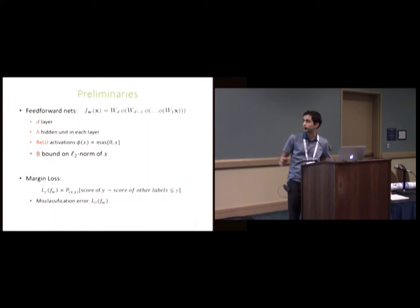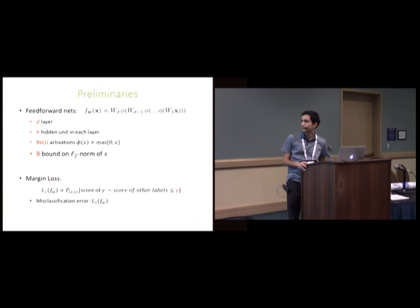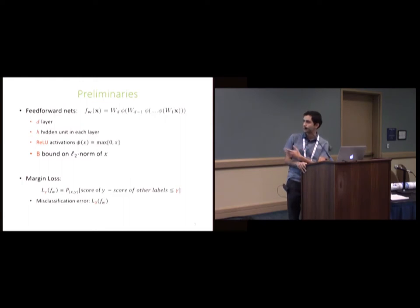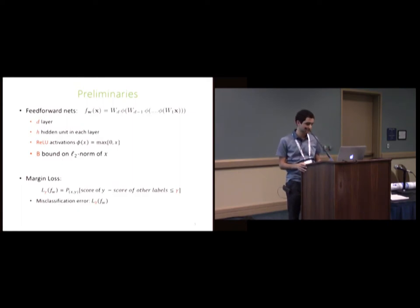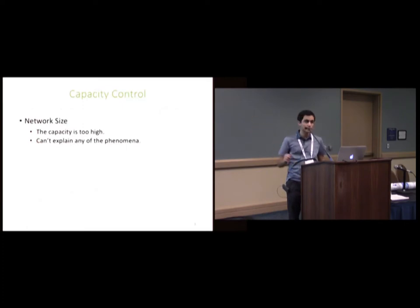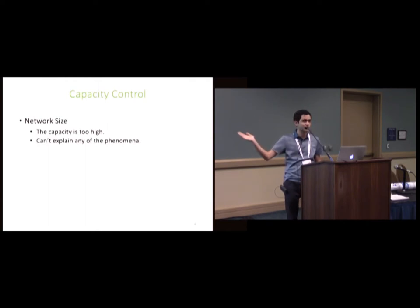Just some notation. For simplicity we are looking at feed-forward nets with D layers, assuming all layers have H hidden units and ReLU activations. B is the bound on the L2 norm of the samples. I'm using the margin loss, which is the probability of the score of the true label minus the score of other labels being less than gamma. Based on this definition, L of zero is just misclassification. One way to look at capacity control is just the size — the number of parameters — but in all those observations there is no way this can explain what's happening, because in two of them the size is fixed.